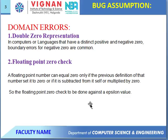Domain Errors — different types with assumptions. First: Double Zero Representation. In computer languages, how they distinguish positive and negative zero representation — boundaries for negative zero are common errors.